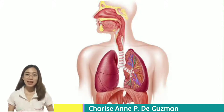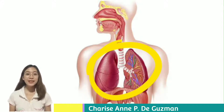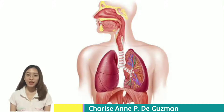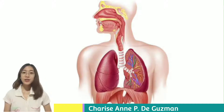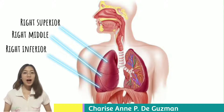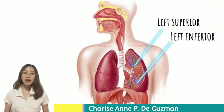The lungs are a group of organs and tissues that work together to help us breathe. Our right lung has three lobes — right superior, right inferior, and right middle. Our left lung has two lobes — left superior and left inferior.